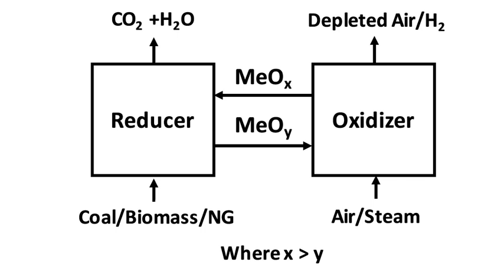Theoretically, for a reversible process, the heat exchange is related to the standard state entropy change, delta-S0, of the primary hydrocarbon oxidation reaction as follows: Q0 equals delta-S0. However, for most hydrocarbons, delta-S0 is a small value and, as a result, an engine of high overall efficiency is theoretically possible.